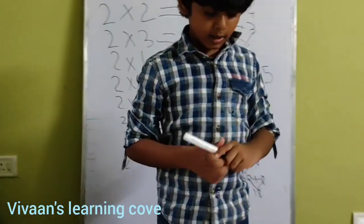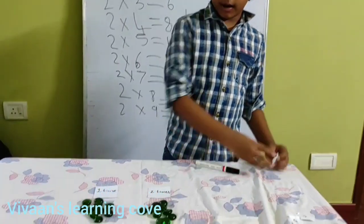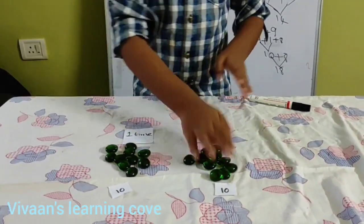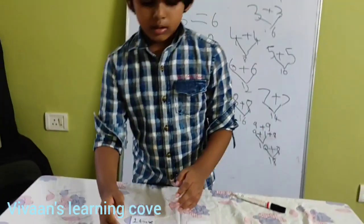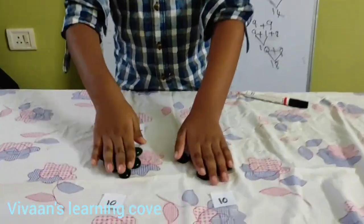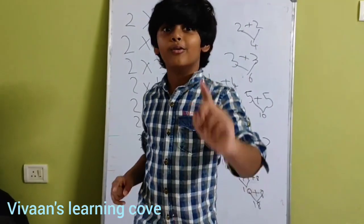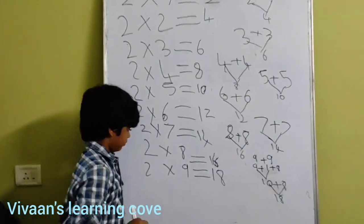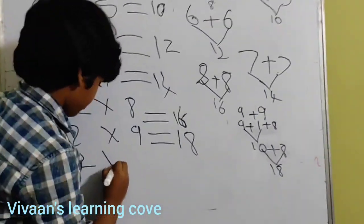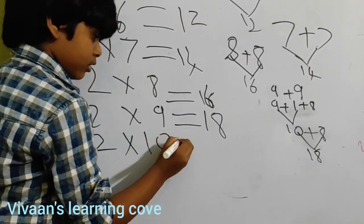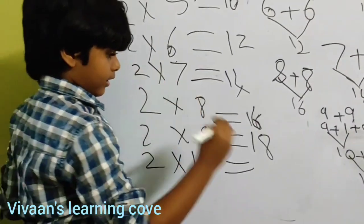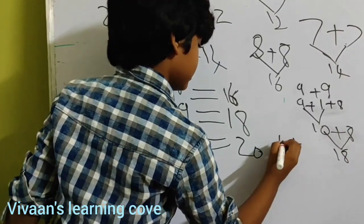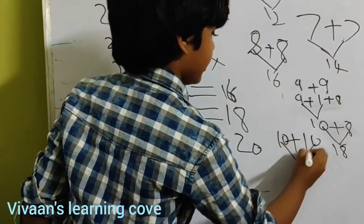Now I am going to take 10 one time and 10 two times. We know that 10 is 10 here. So 10 plus 10 equal to 20. This means 2 times 10 equal to 20.